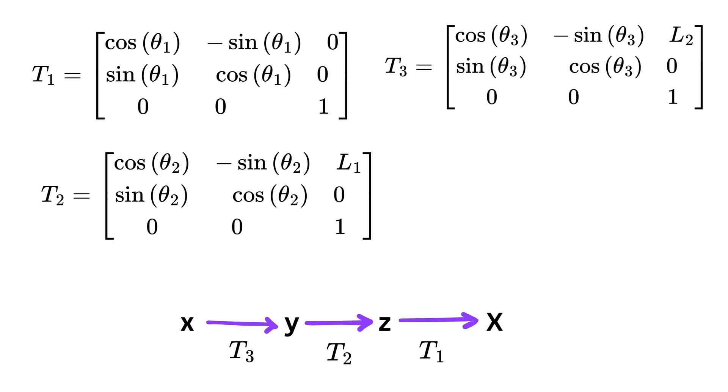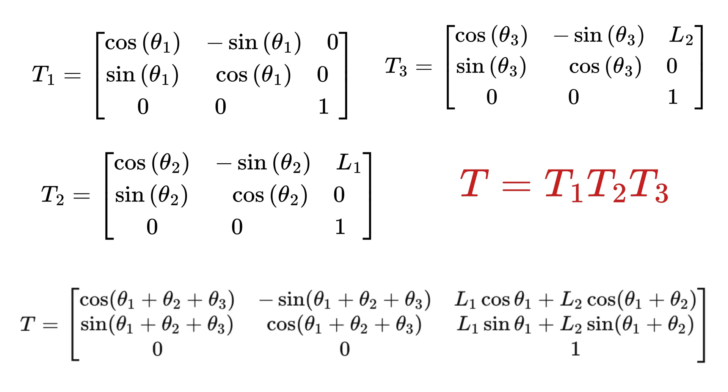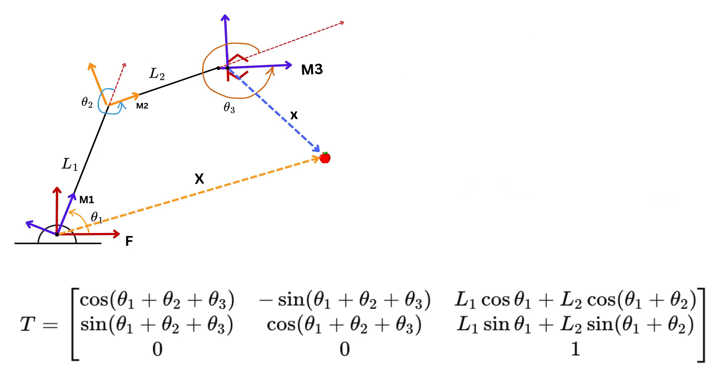Using these, the forward kinematics position can be found by multiplying the matrices T equals T1 times T2 times T3. If you multiply all of them together, we get this T as this matrix.